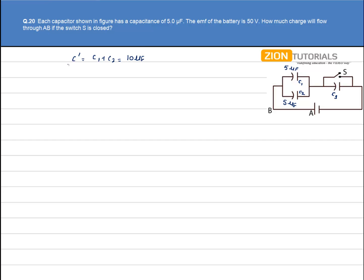Now this C' is in series with C3. So C equivalent of the circuit will be 1 by C' plus 1 by C3 that is 1 by 10 plus 1 by 5. It comes out to be 3 by 10. So C equivalent is 10 by 3 microfarad.